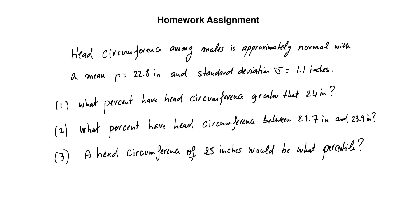Head circumference among males is approximately normal with mean 22.8 inches and standard deviation 1.1. The homework asks: what percent have head circumference greater than 24 inches (use normCDF, interval 24 to large number); what percent have circumference between 21.7 and 23.9 inches (normCDF with that interval); and what percentile is a head circumference of 25 inches (given a location, find the percent — use normCDF or invNorm accordingly). Make sure to draw a picture for each.